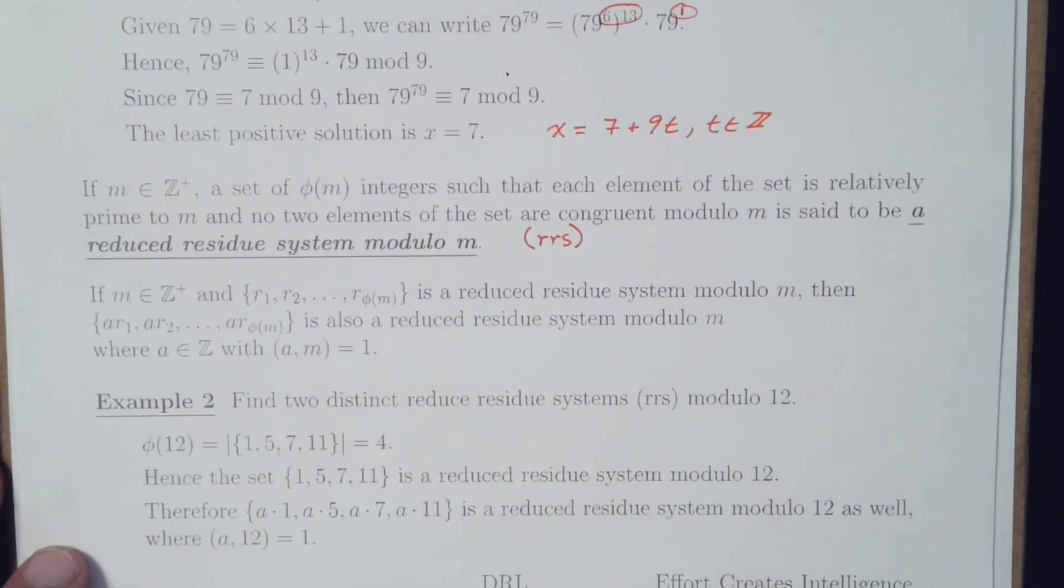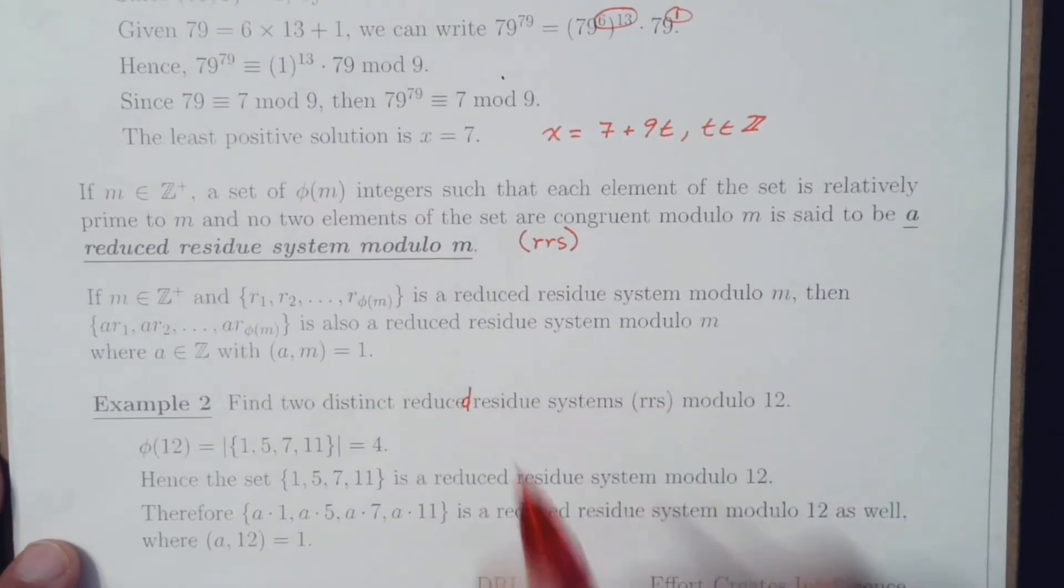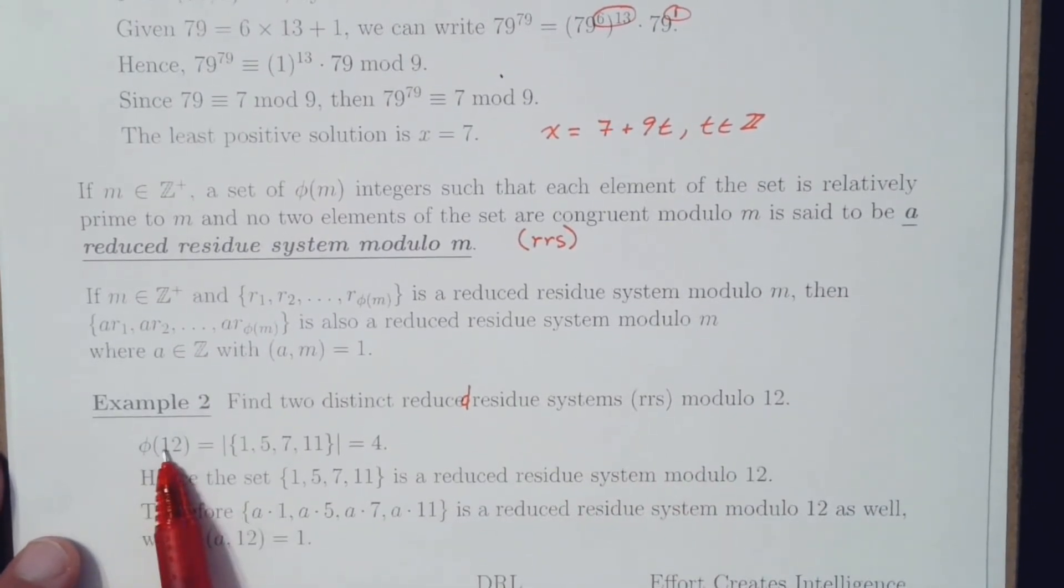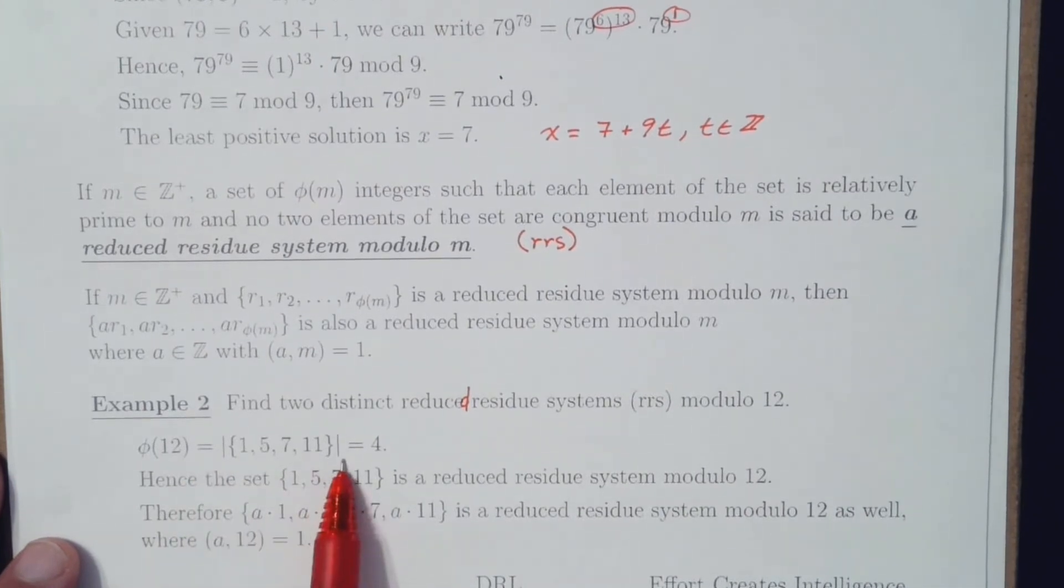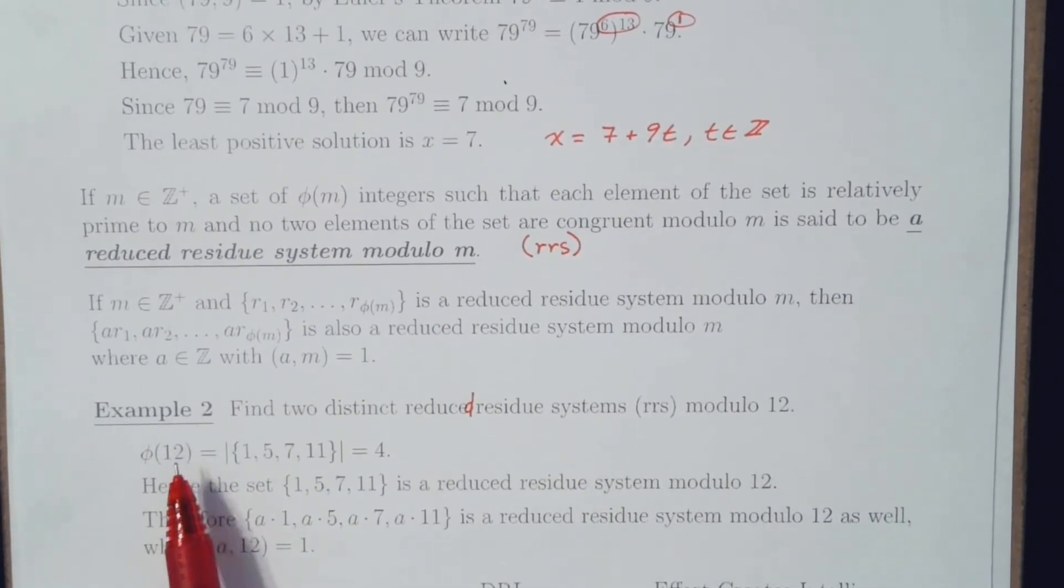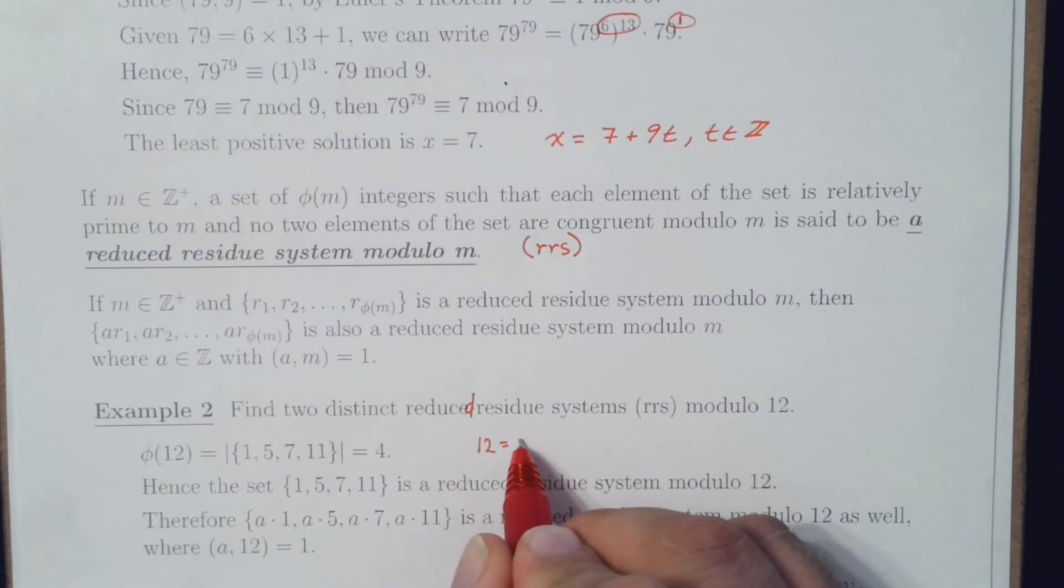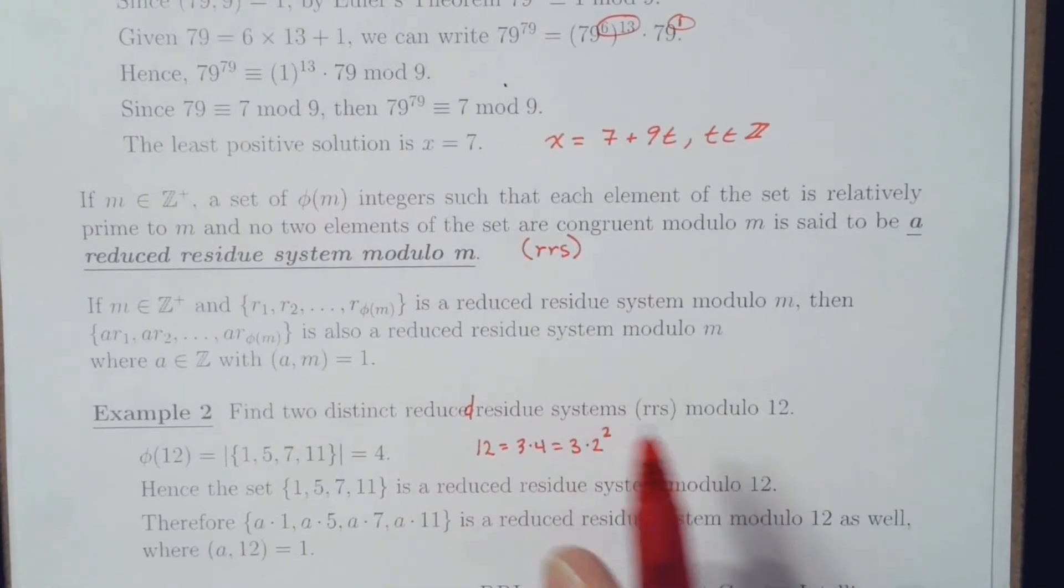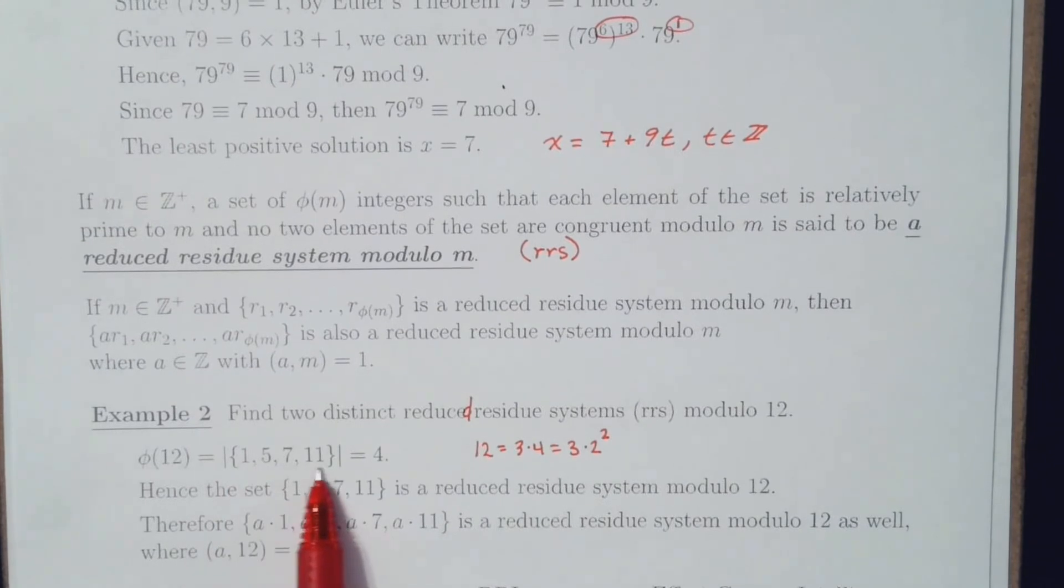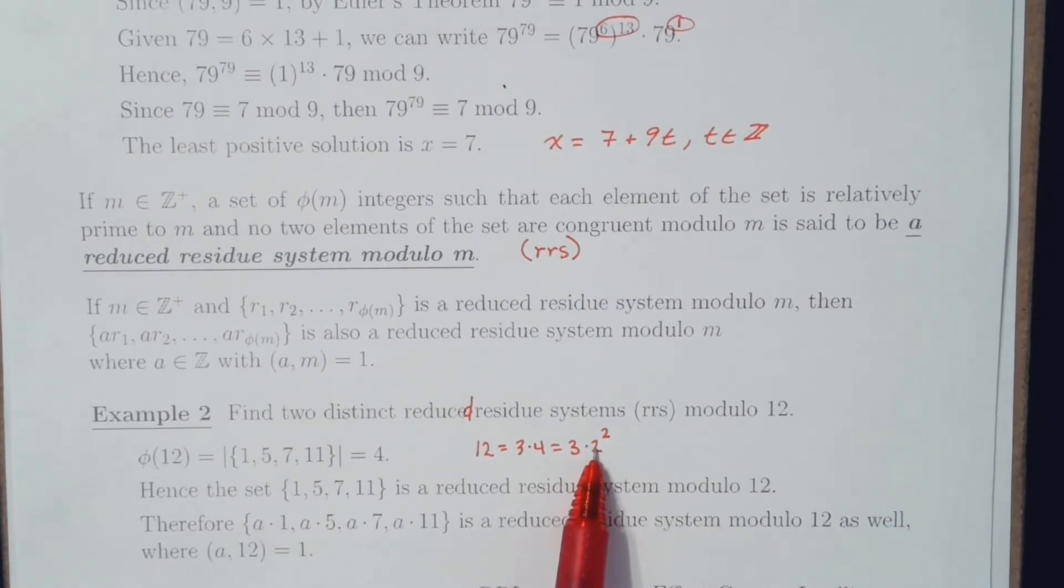So, let's look at the example for this information. Find two distinct reduced residue systems modulo 12. Well, phi of 12 is the magnitude of the set of positive integers relatively prime to 12 that are less than or equal to 12. We know that 12 is equal to 3 times 2 squared.